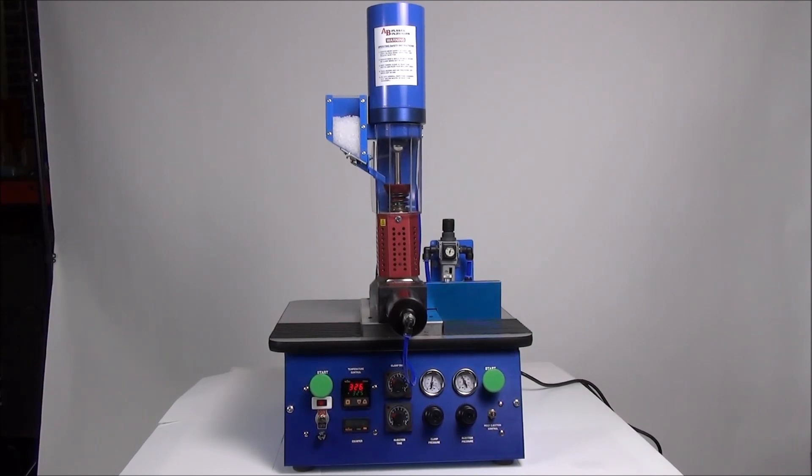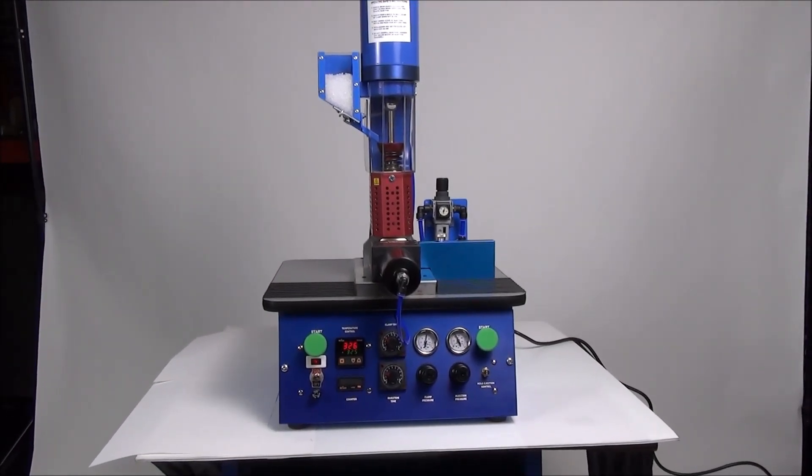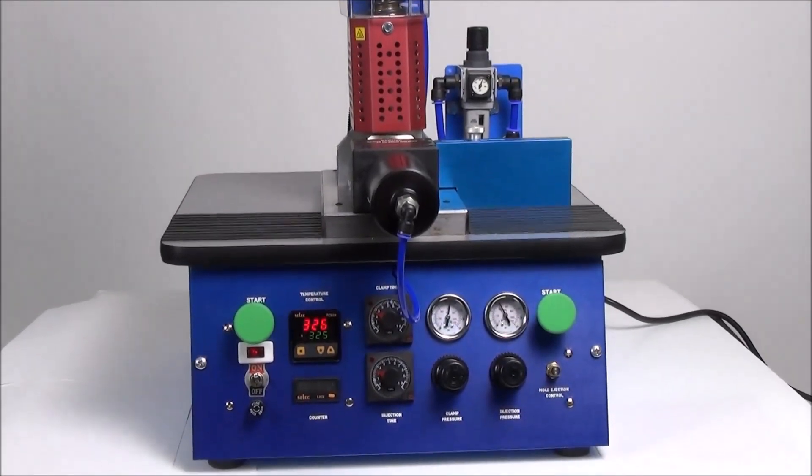Setting up your AB200 plastic injector is very simple. Locate the unit on a flat and stable surface and connect the unit to both power and air pressure sources. Note that the unit is available in both 110 and 220 volts.